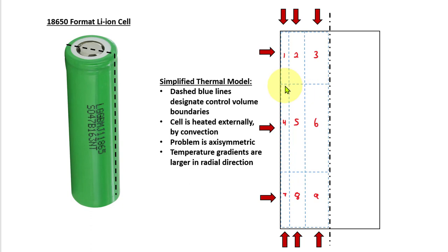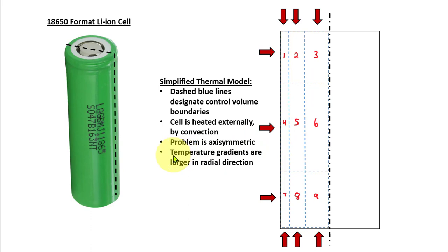To solve the thermal problem we're going to use a control volume analysis. I've drawn 9 control volumes numbered 1 through 9, with each control volume boundary designated by dashed blue lines. We're assuming the cell is heated externally by convection, represented by red arrows, and the problem is axisymmetric. Temperature gradients will be larger in the radial direction because the thermal conductivity is lower radially than axially, so the control volumes have non-uniform spacing in the radial direction. Control volume 1 is skinnier than control volumes 2 and 3, while in the axial direction they are more or less uniformly spaced.